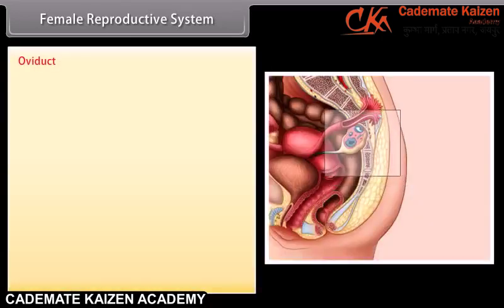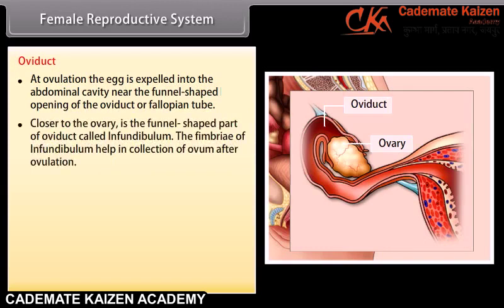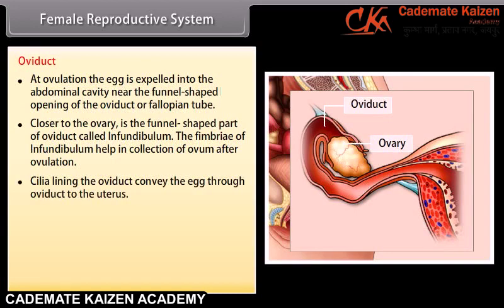At ovulation, the egg is expelled into the abdominal cavity near the funnel-shaped opening of the oviduct, or fallopian tube. Closer to the ovary is the funnel-shaped part called the infundibulum. The fimbriae of the infundibulum help in collection of the ovum after ovulation. Cilia lining the oviduct convey the egg through the oviduct to the uterus.